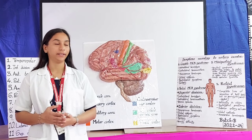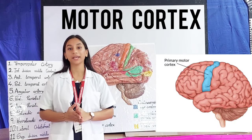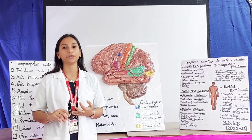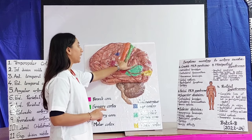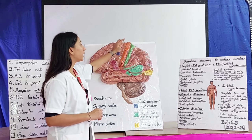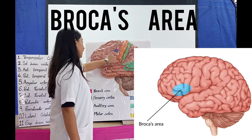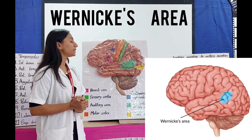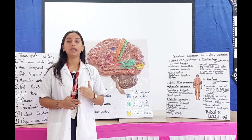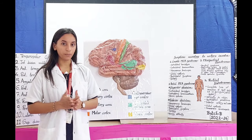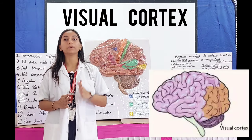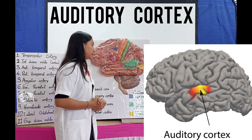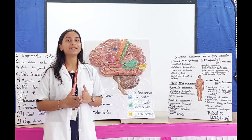Let's discuss the functional areas. First is the motor cortex — it controls the voluntary activities of half of the body. Second is the sensory cortex — it controls every sensation like touch, temperature, pain, etc. The fibers of the motor and sensory cortex run upside down, meaning the fibers for the legs are present at the top. Next is Broca's area, concerned with spoken speech, located in the frontal lobe. Then Wernicke's area, present only in the dominant hemisphere, concerned with language comprehension, located in the parietal lobe and part of the temporal lobe. The visual cortex, concerned with perception, is located in the occipital lobe. The auditory cortex, concerned with hearing, is located in the temporal lobe.